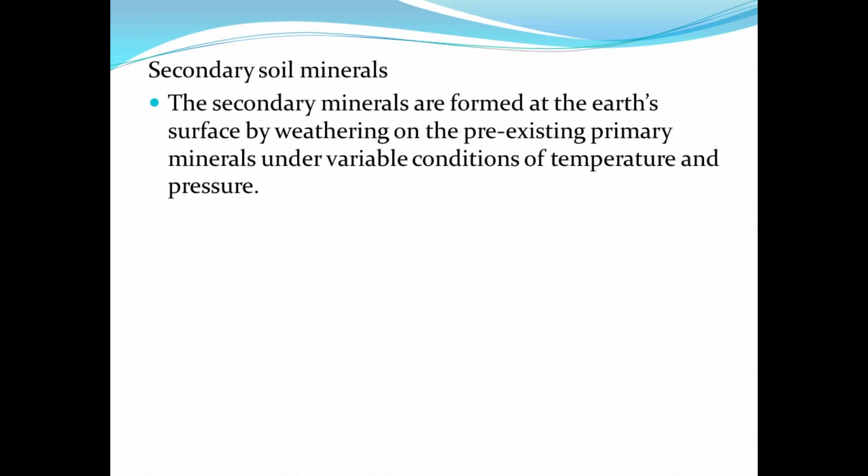Now let's take a look at secondary minerals. Secondary minerals are formed at the earth's surface by the weathering of pre-existing primary minerals under variable conditions of temperature and pressure. So secondary minerals are formed after the weathering of existing primary minerals, and the weathering that usually occurs is chemical weathering.